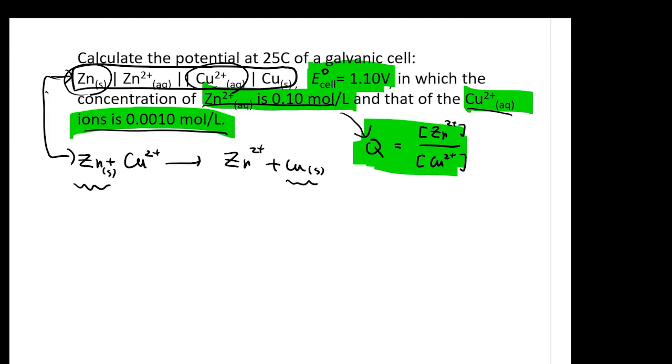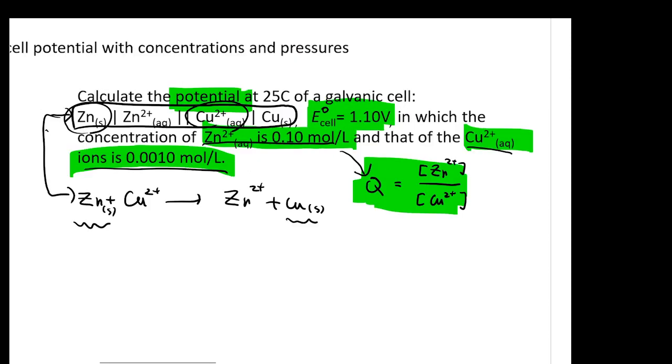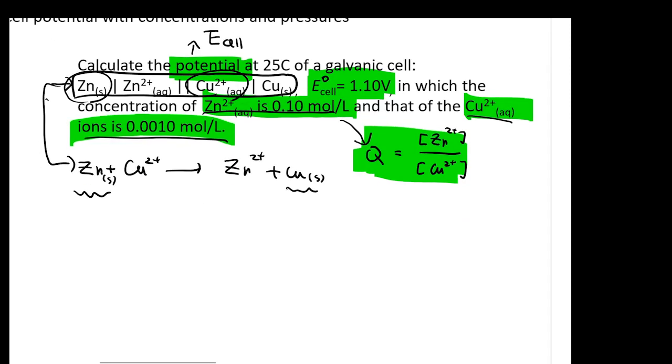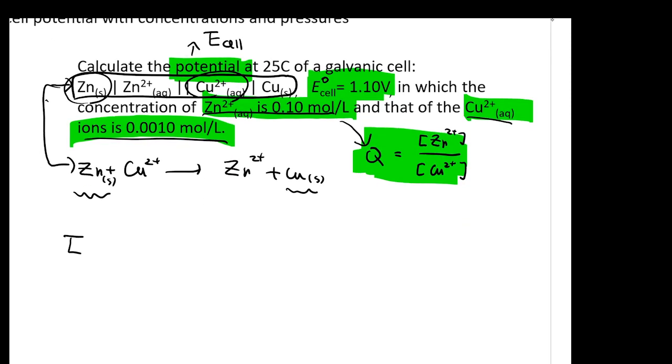It asks for the potential, right? So every time you see this keyword potential, it actually tells you, I want to know your E cell. This question must test me: Do I know the relationship between my E cell and my Q? So by seeing these features, then I know the only equation that has both components is E cell equals E° cell minus, make sure you know it's minus,